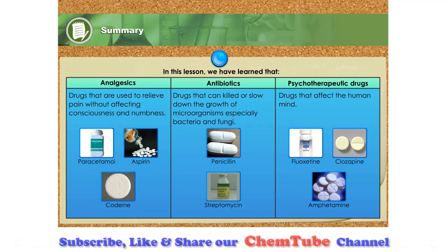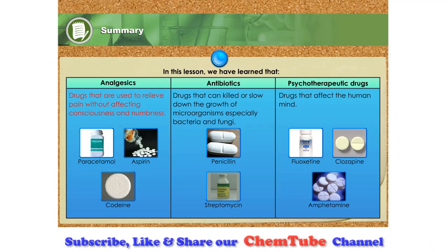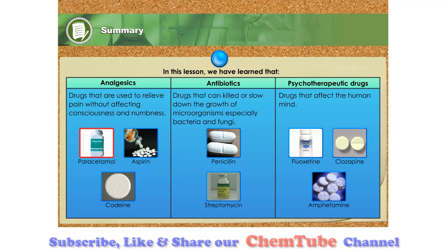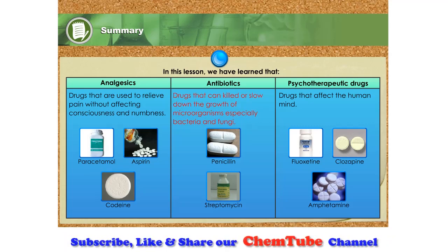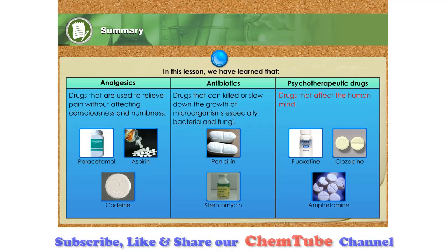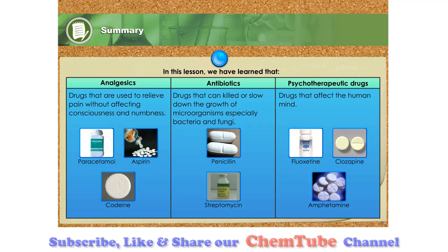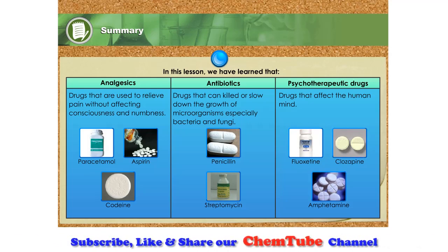The table shows examples of modern drugs grouped under three groups of medicine. Analgesics are drugs used to relieve pain without affecting consciousness and numbness; examples include paracetamol, aspirin, and codeine. Antibiotics can kill or slow down the growth of microorganisms, especially bacteria and fungi; penicillin and streptomycin are common examples. Drugs that affect the human mind are known as psychotherapeutic drugs, including antidepressants, clozapine, antipsychotics, amphetamine, and stimulants.